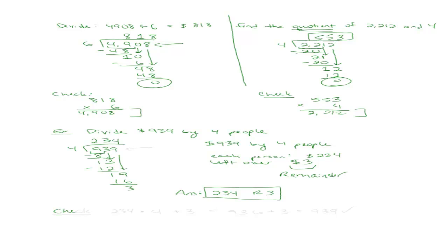To check this answer, we take our quotient times our divisor, then add the remainder. So 234 times 4: 4 times 4 is 16, carry the 1; 4 times 3 is 12, plus 1 is 13, carry the 1; 4 times 2 is 8, plus 1 is 9. That gives us 936, plus the remainder of 3 equals 939. That was our dividend, so we know we did everything correctly.